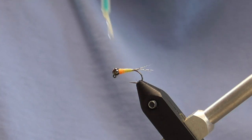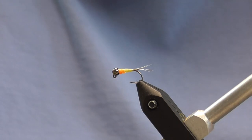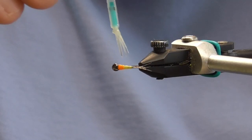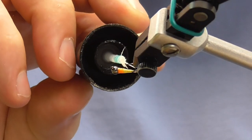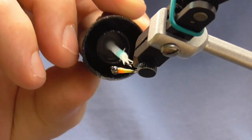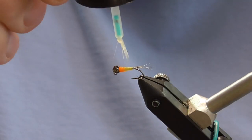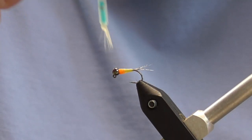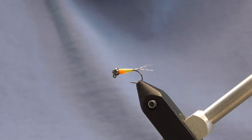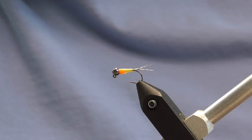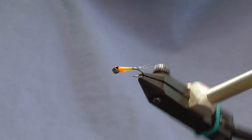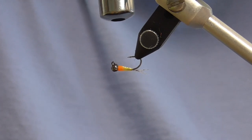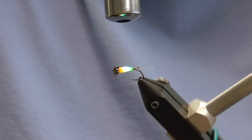But it will also reduce the drag on the fly. Anytime you've got any little ridges or non-smooth areas, there's going to be some sort of resistance slowing the sink rate of the fly, which is one of the reasons the pertagon is such an effective fly pattern, because they get down so quick.